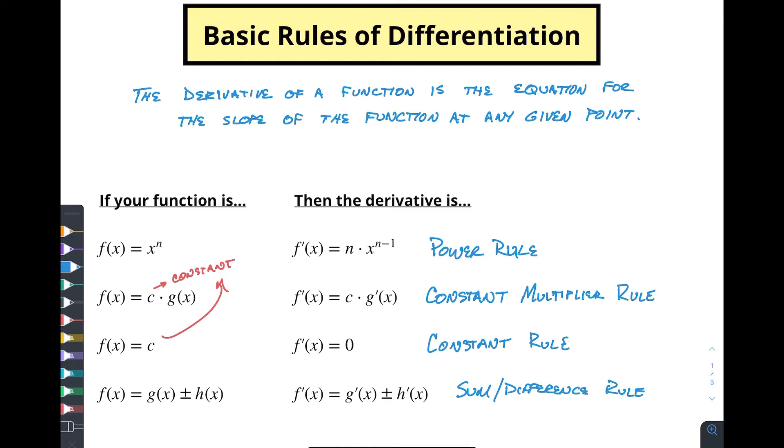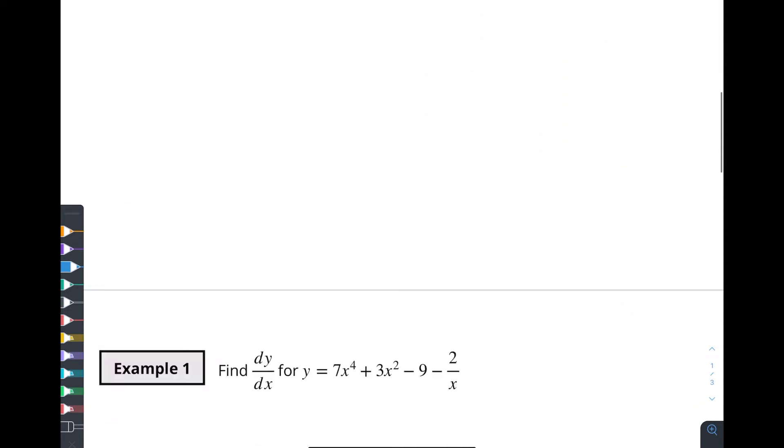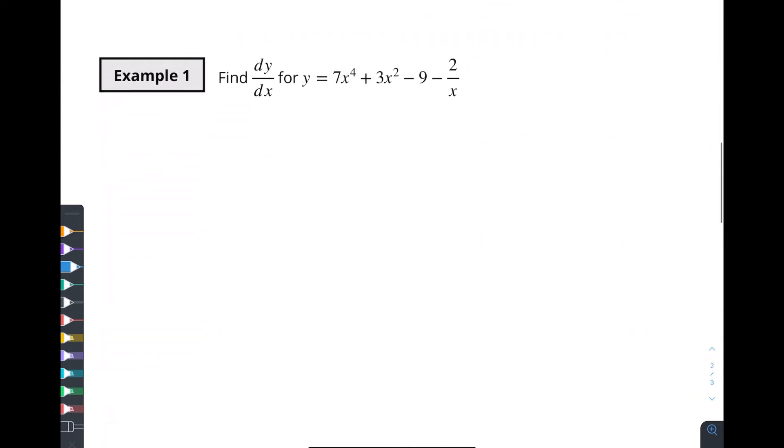Here's our first example. So we've got this function, y equals 7x to the fourth plus 3x squared minus 9 minus 2 over x. Now, we don't know how to do a division problem yet. You'll learn that in some future videos. But right now, we don't know that.